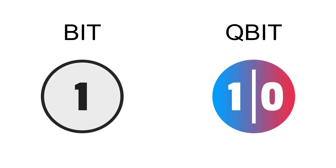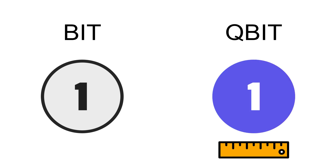This is a bit. It can be either zero or one. A little bit lame. This is a qubit. It stores two values at the same time, until we measure its value. A little bit better.